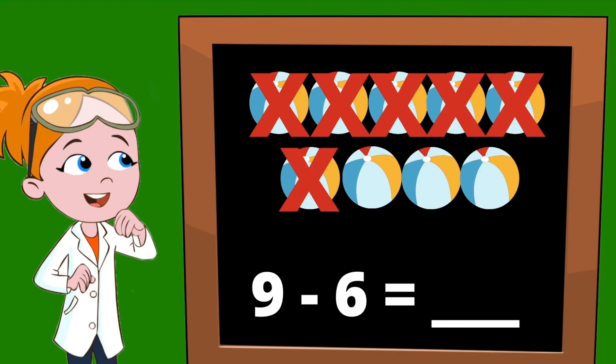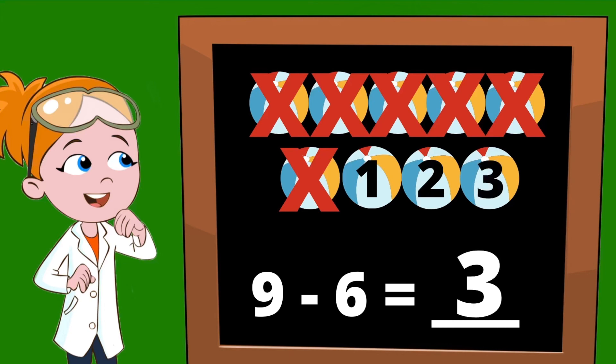Perfect. Now, we can count how many beach balls are left. 1, 2, 3. And there's our answer: 3. There are 3 beach balls left. So 9 minus 6 equals 3.